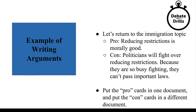Let's look at a specific example of writing different arguments. One pro-argument is that reducing restrictions on immigration to the United States is morally good. A con argument is that politicians will fight over reducing restrictions and because they are so busy fighting, they can't pass other important laws. For each argument, we'd want to find pieces of evidence that support it — finding articles and cards that we cut and put into one document.